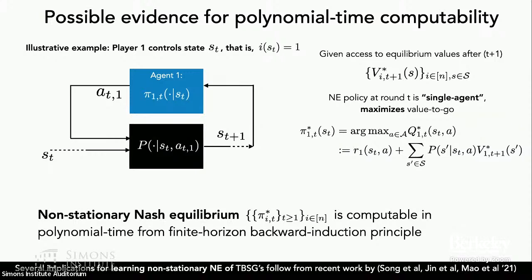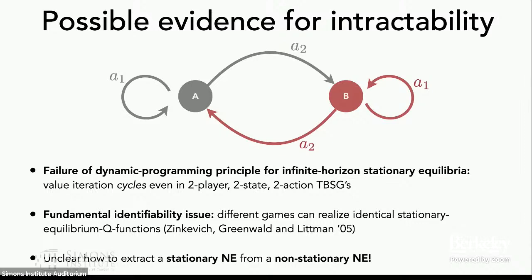On the other hand, it turns out to not be easy or obvious how to extract a stationary solution concept from a non-stationary one. Turning to the infinite horizon setting where we allow the game to play for infinite rounds and consider a discounted model, there's a fundamental failure in the infinite horizon dynamic programming principle for learning stationary equilibria. A very nice paper by Mannor, Greenwald, and Littman in the 2000s showed that variants of value iteration and policy iteration will actually cycle instead of converging to a stationary solution concept.